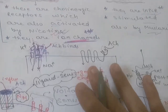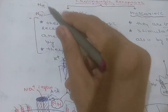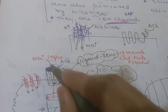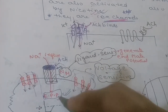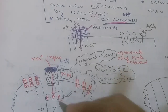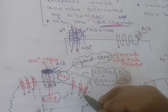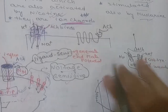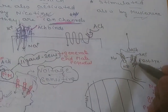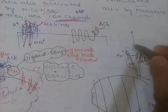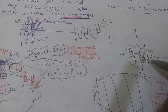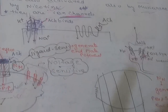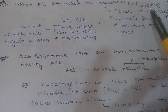The NM receptor is present at the neuromuscular junction. Acetylcholine binding causes sodium influx, generating an excitatory post-synaptic potential, which opens voltage-sensitive sodium channels, causing action potential generation. The NN type of nicotinic receptor is found at ganglia, where pre-ganglionic neurons synapse with post-ganglionic fibers.